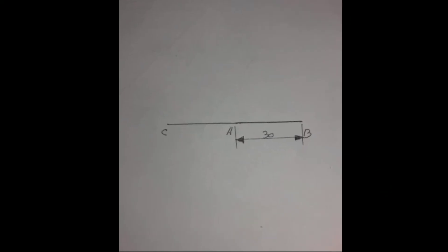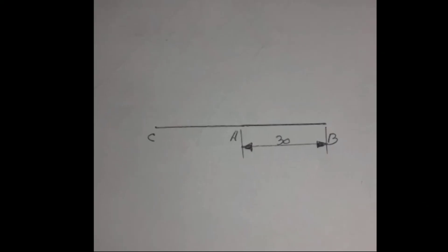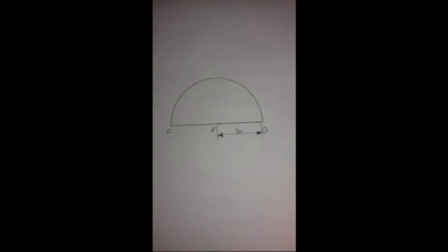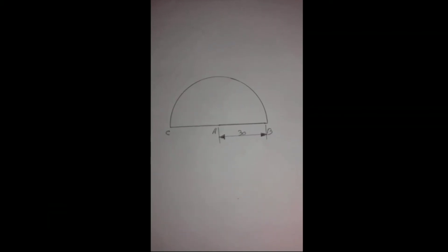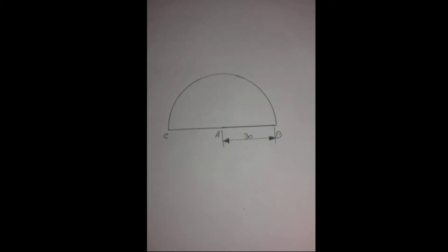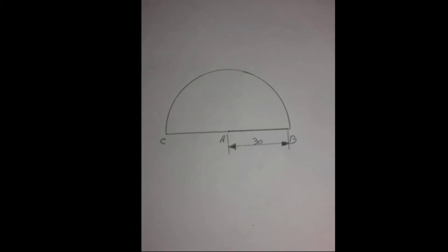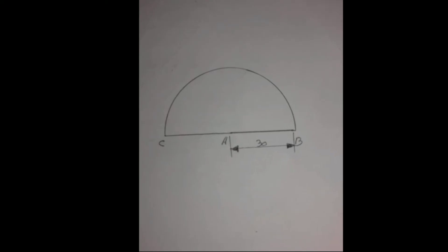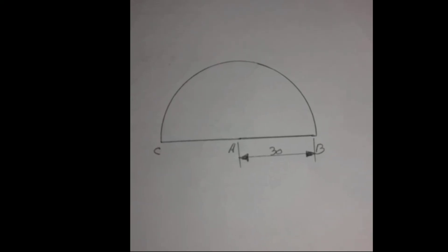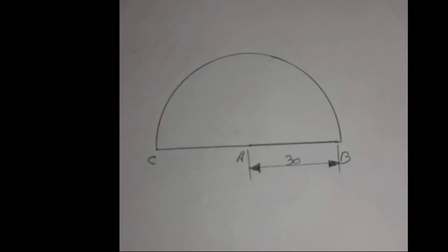We have a point in C. We have a point in AC. AC is equal to AB. We have a half circle. We have a half circle in A, and a half circle in AB. We have a half circle in V. Let's begin the angle.